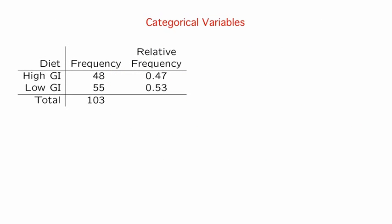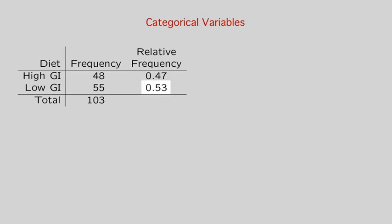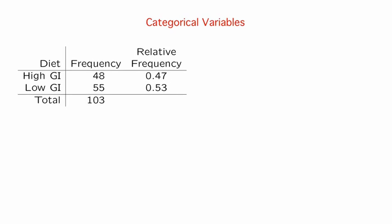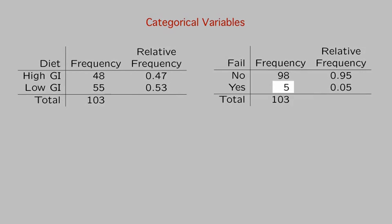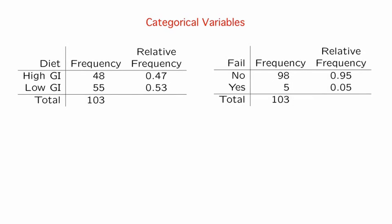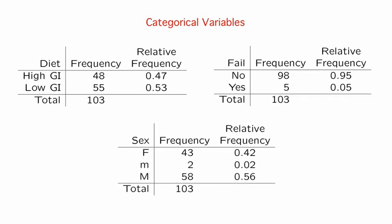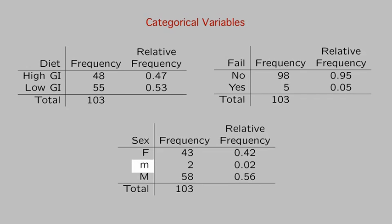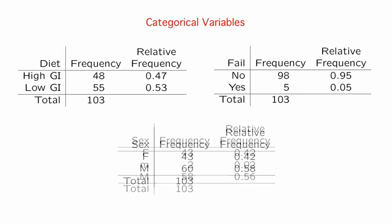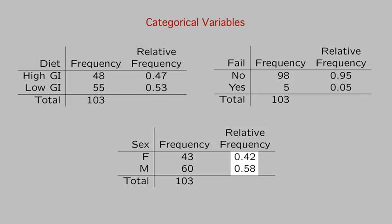For diet, we can see that our randomization process resulted in slightly more subjects, 53%, receiving the low GI diet. Only five of our 103 subjects were considered to be treatment failures, that is, they needed to withdraw because they went on medication. And for sex, we see our first potential problem. Some of the males were inadvertently coded with a lowercase m. But we can fix that, and then we can see that the recruitment resulted in 58% males and 42% females.